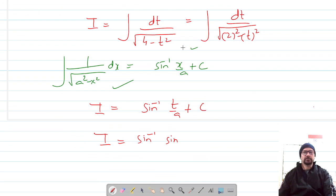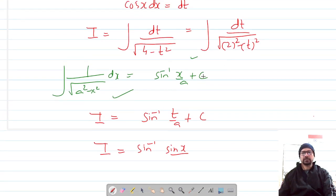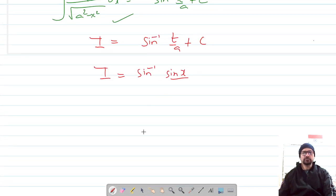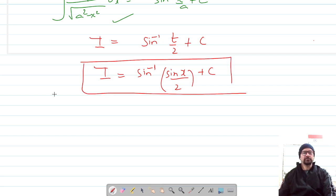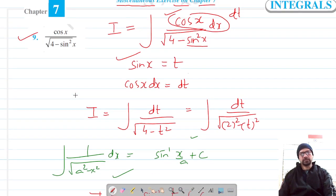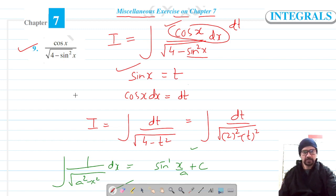So it's sine inverse, a was 2, so it's sine inverse of sine x by 2 plus c, and that's our final answer for question number 9. Do like, share and subscribe, thank you for watching.